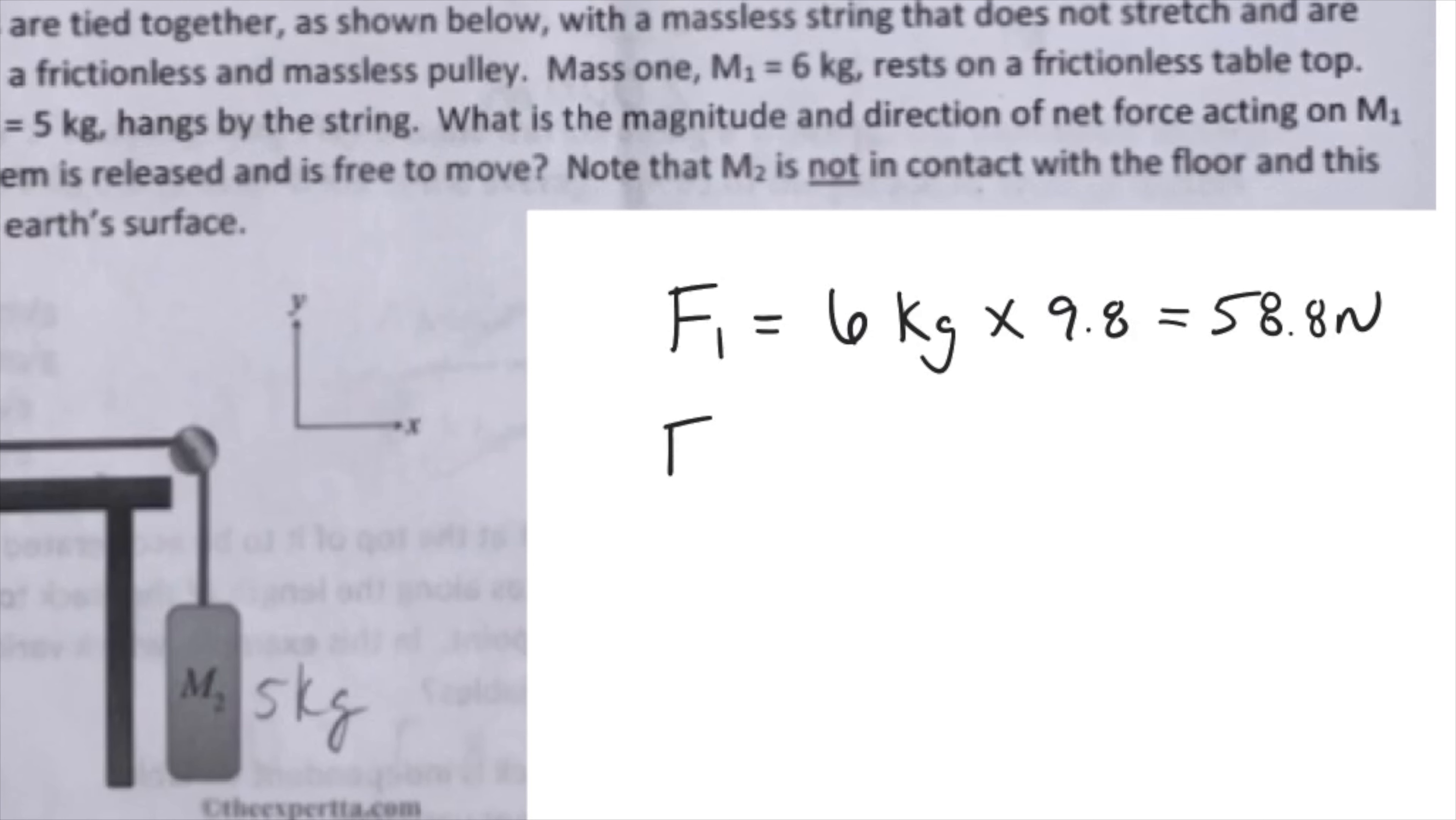For M2, you're going to do five kilograms times 9.8, because we're still on Earth. And that gives you 49 Newtons of net force on the box.